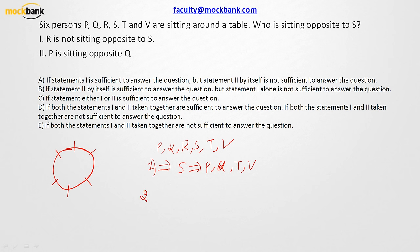Statement number two says that P is sitting opposite to Q. So let us make it. P is sitting opposite to Q. So P and Q are gone. So who can sit before S? S can be R, T and V. Still we have no idea who is going to sit before S. So individual statements are not giving you any answer.